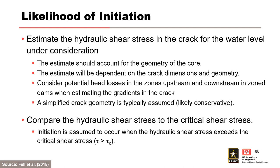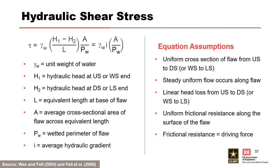The hydraulic condition for initiation requires an estimate of the crack location and geometry, the applied hydraulic shear stress in the pipe or crack, and the critical shear stress. Concentrated leak erosion will initiate when the applied hydraulic shear stress exceeds a critical value, as described in node 2 of the typical event tree. This requires estimating the hydraulic shear stresses in the crack for the water level under consideration, taking into account the geometry of the core and assumed crack dimensions and location relative to the water level so the flow gradient can be determined. A simplified crack geometry is usually assumed, which may result in very conservative estimates; therefore, sensitivity analysis is strongly suggested. Potential head losses in upstream and downstream zones in zoned dams may need to be considered. The hydraulic shear stress equation equals the product of the unit weight of water, the hydraulic gradient of flow in the pipe or crack, and the ratio of the cross-sectional area of the crack to its wetted perimeter. Uniform cross-section, linear head loss, and uniform frictional resistance are assumed.